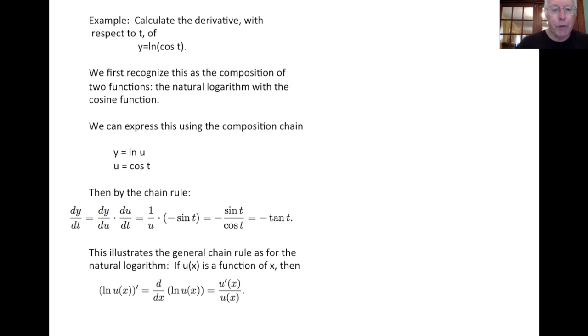This illustrates the general chain rule for the natural logarithm. Probably worth remembering that if u is a function of x, then the derivative of log of u of x with respect to x is simply u prime of x over u of x. The 1 over u of x is the derivative of the log function. The u prime is the derivative of the function that you're composing with the logarithm function.